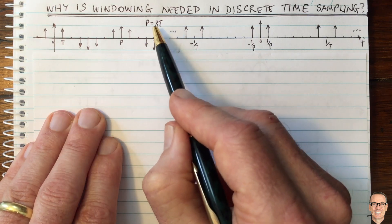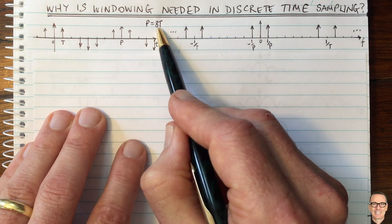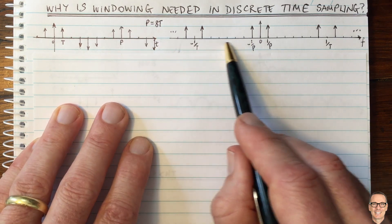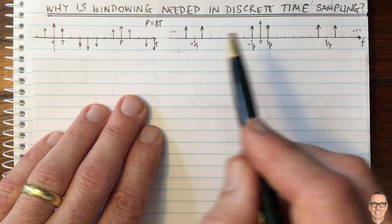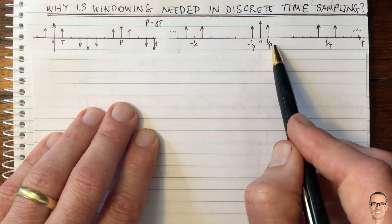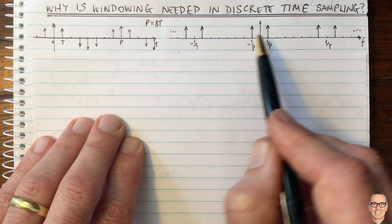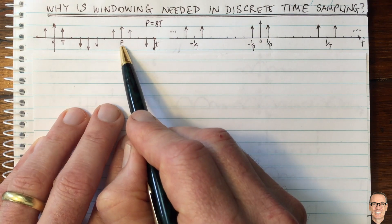I've drawn this for a case where capital P equals eight times capital T. In the frequency domain, the Fourier transform will have spikes at one on P. That's the frequency of this sinusoid that has a period of P.